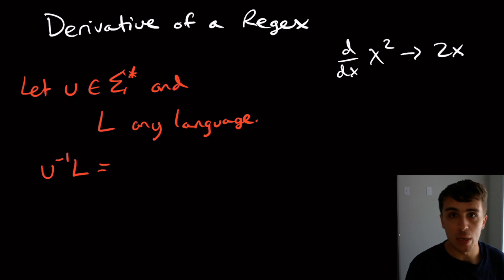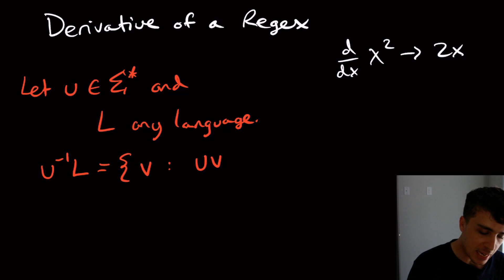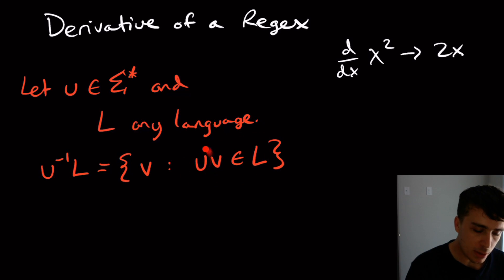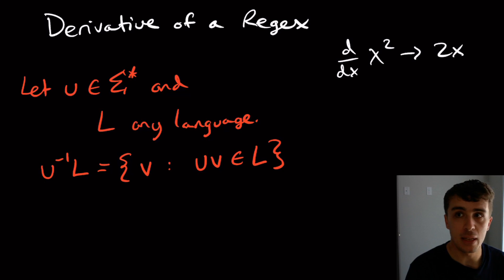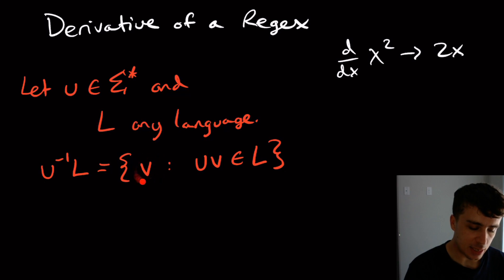So what is this language? It's all the strings v such that u concatenated with v is in L. In other words, take every string in L, and if the string u is at the front of it, take it away. And you will be left with v.